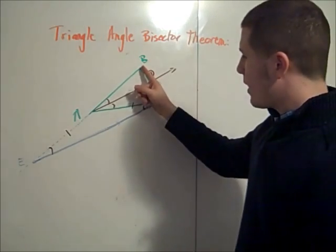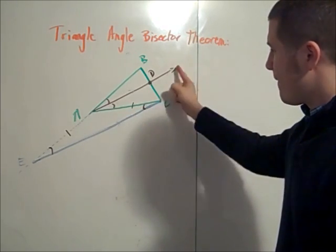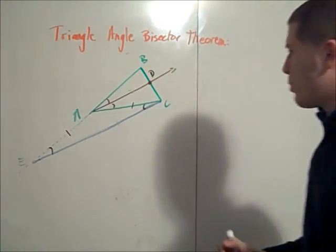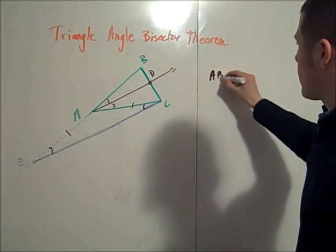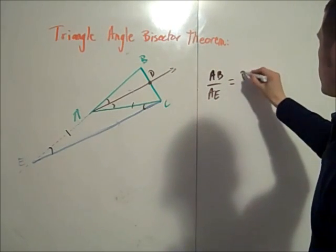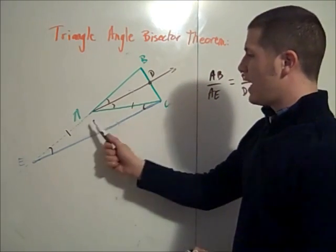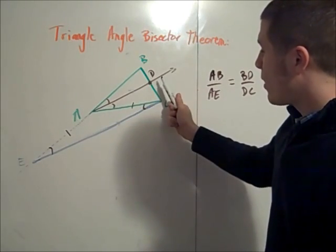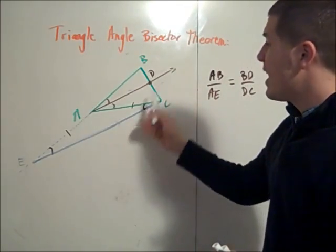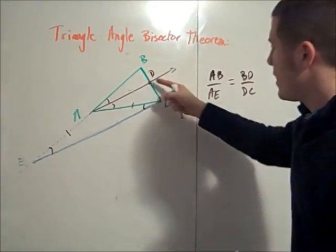But if we consider triangle BEC, we can see that AD is parallel to EC, and so we have by the side splitter theorem that AB over AE is equal to BD over DC. That's by the side splitter theorem, which states that if you have a line that intersects a triangle parallel to one of the sides, then it cuts those two sides proportionally.